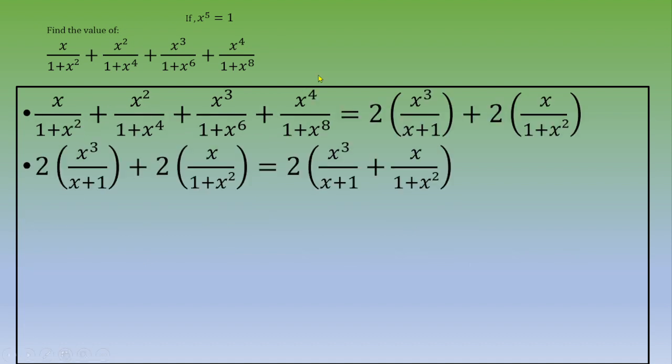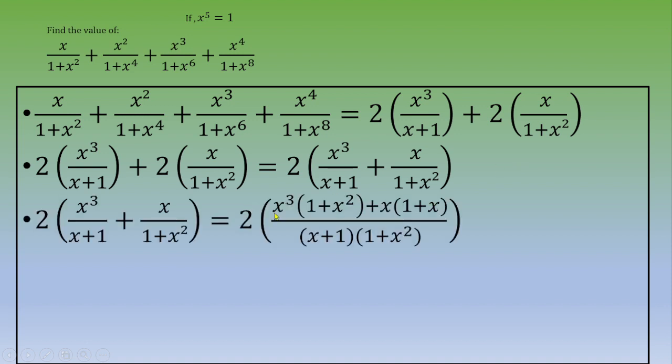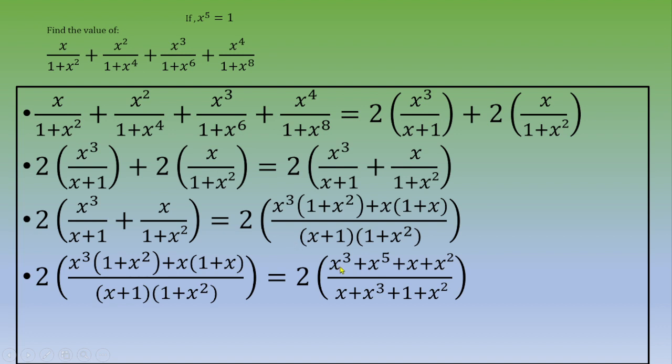Now we've got a sum of two terms. We can reduce that to the common denominator. If you distribute, we end up with x cubed plus x power 5 plus x plus x squared, over x plus x cubed plus 1 plus x squared.